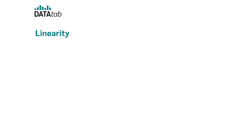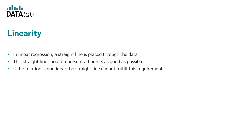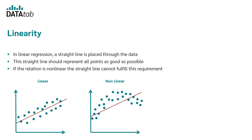In a linear regression, a straight line is drawn through the data that should represent all points as well as possible. If the points are non-linear, the straight line cannot fulfill this task. Looking at two graphs: in the first, we see a nice linear relationship where the regression line can be drawn meaningfully. In the second, there is a clearly non-linear relationship, making it impossible to put the regression line meaningfully through the points. This results in coefficients that cannot be interpreted meaningfully, or larger-than-expected prediction errors. Linearity should be checked graphically at the beginning.